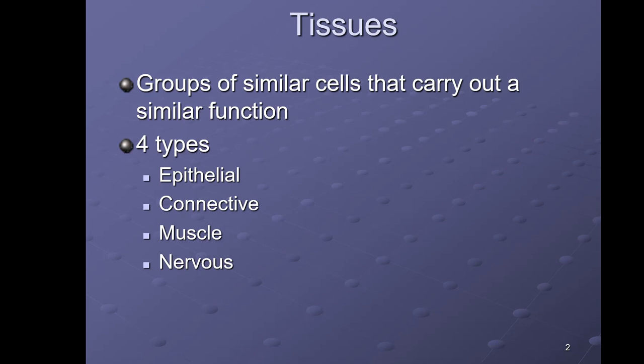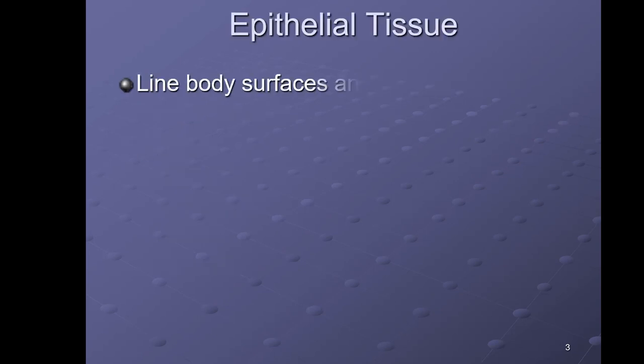Any substance in the body can fit into one of those four categories. We're going to spend the bulk of this lecture talking about epithelial and connective tissue, and then we'll just touch on muscle and nervous tissue here before covering them in multiple chapters later in the semester. Epithelial tissues line body surfaces and cavities — great examples are the skin and the lining of your stomach.